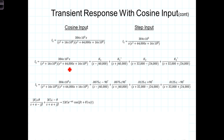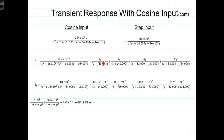We have two quadratic terms. The first has no S to the first power term, so it factors as (S minus J40,000) times (S plus J40,000). The second quadratic, using the quadratic formula, gives factors (S plus 32,000 minus J24,000) and its conjugate. In both cases we have conjugate pairs, so we really just need to solve for K1 and K2 — the constants for the conjugate pairs.